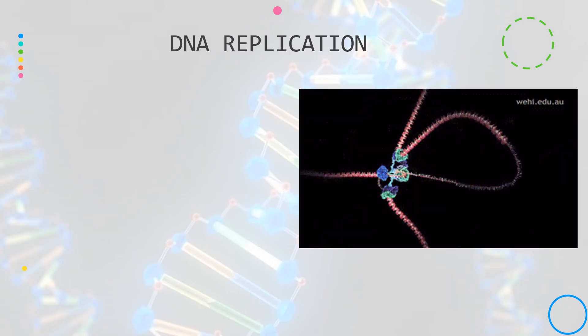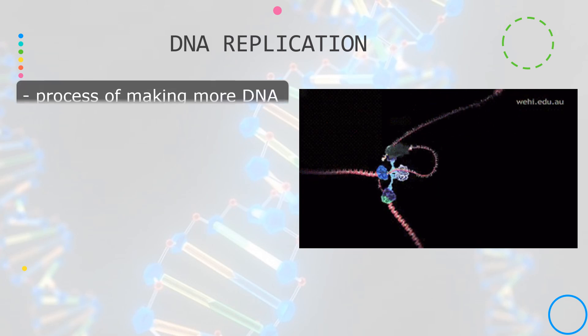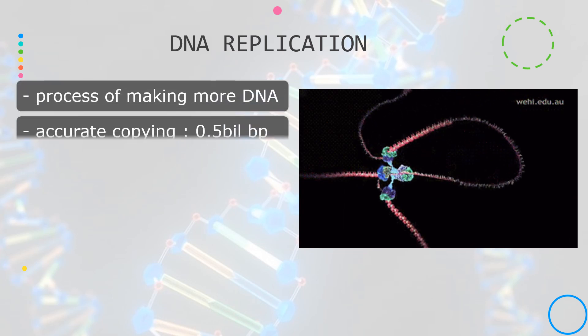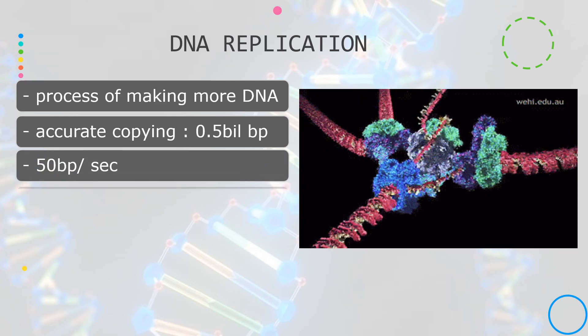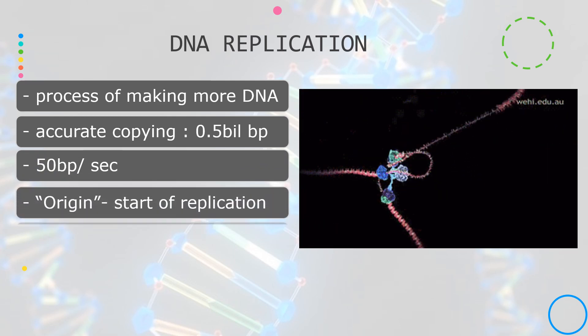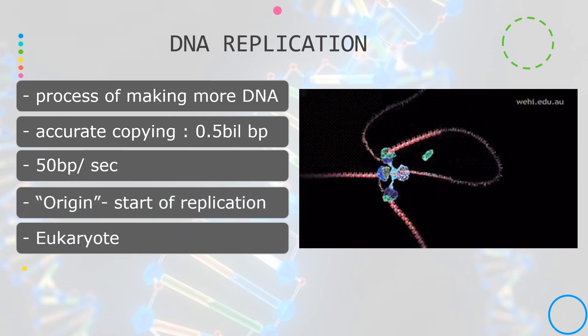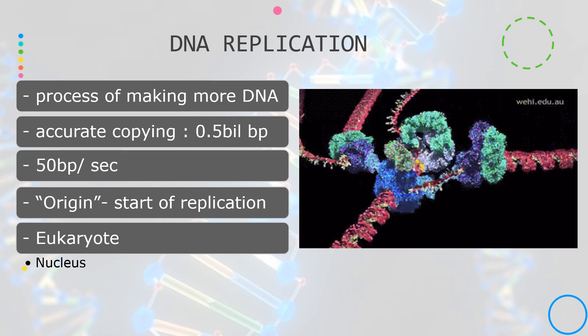So what is DNA replication? DNA replication is the process of making more DNA. This is a biological process of producing two identical replicas. Each resulting cell can keep a copy of all the chromosomes.